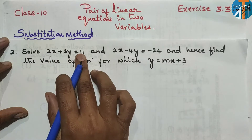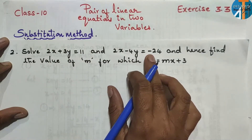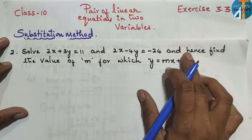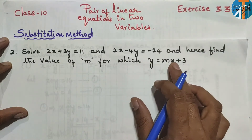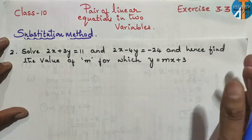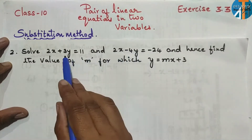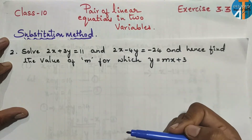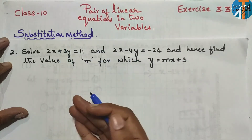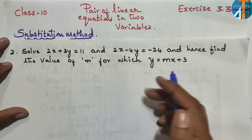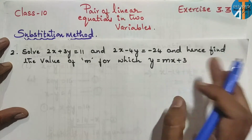Question number 2: Solve 2x + 3y = 11 and 2x − 4y = −24, and hence find the value of m for which y = mx + 3. We have to consider these two equations, solve them using substitution method to find x and y, then substitute those values into this equation to find m.